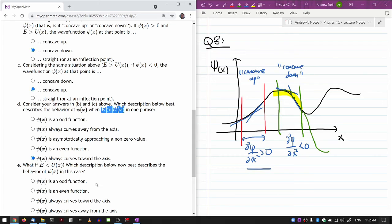Where the total energy is greater than the potential energy, the wave function always curves towards the axis. That should result in something that's oscillatory, because when the wave function is above the axis it's curving down towards it, and when it's below the axis it's curving up towards it.